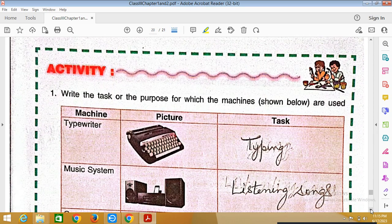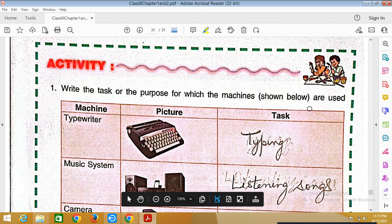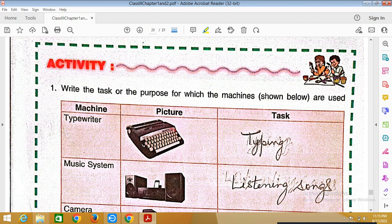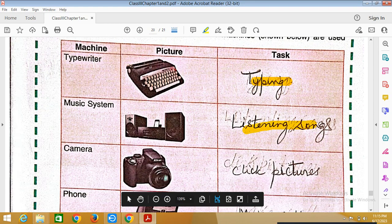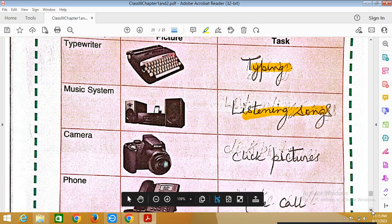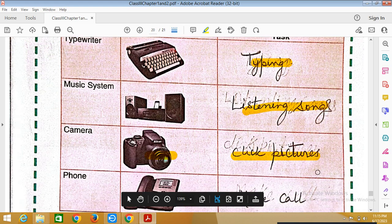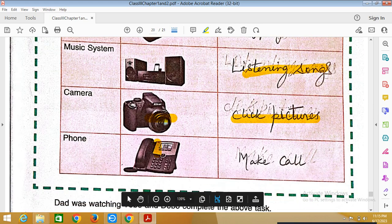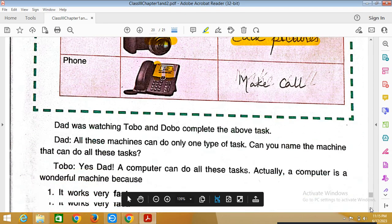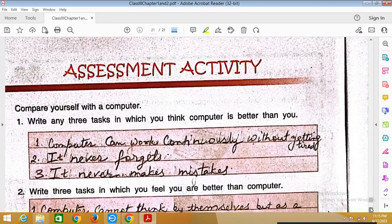Next: Write the task or the purpose for which the machines shown below are used. Printer: to print. Second one is music system: listening songs. Third, camera: click pictures. Phone: make calls. Now moving to the next activity.